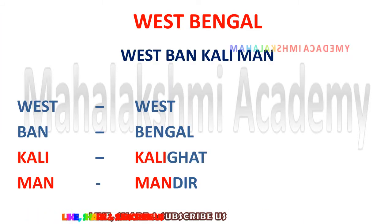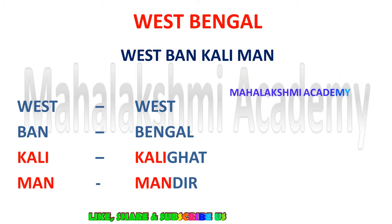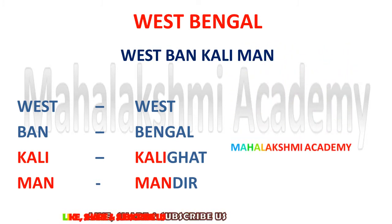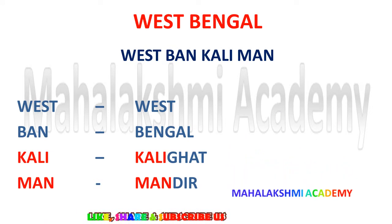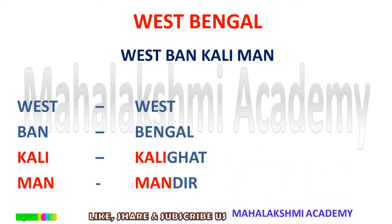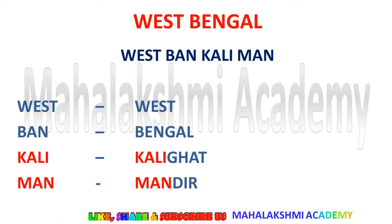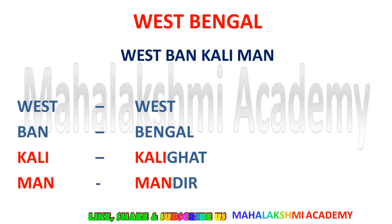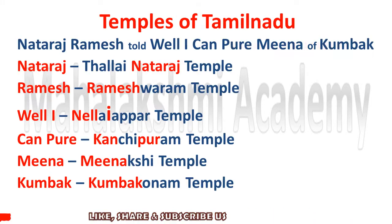First we are going to discuss about the temples of West Bengal. The trick is 'West Ban Kali Man.' West and Ban remind you the trick belongs to West Bengal. Kali is for Kalighat and Man is for Mandir. So you can find that Kalighat Mandir is in West Bengal through the trick 'West Ban Kali Man.'